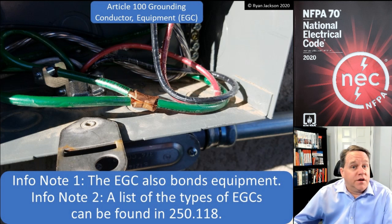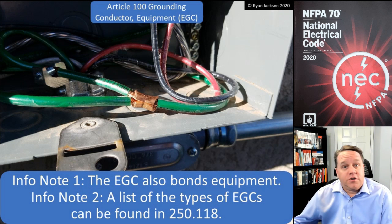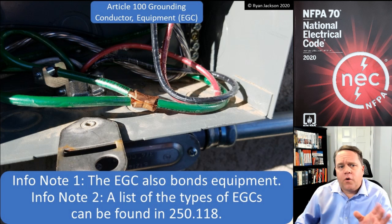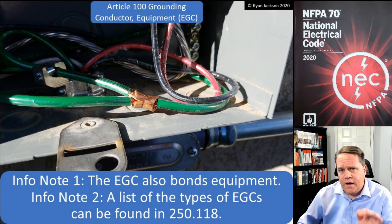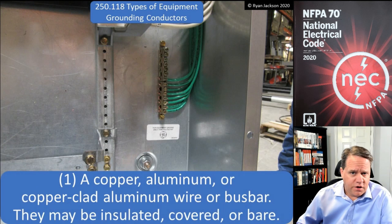The second informational note tells us that a list of the different types of equipment grounding conductors can be found in Section 250.118. Let's take a quick look at 250.118 and see what the different types of equipment grounding conductors we can use.